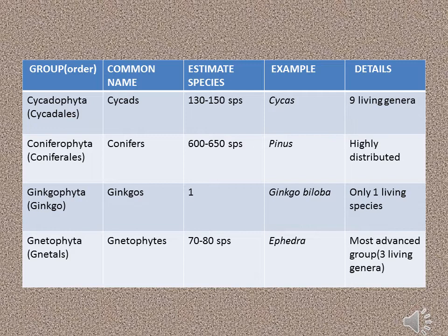Ginkgophyta, also called Ginkgoales, has the common name Ginkgo. It has only one species, which is Ginkgo biloba. Gnetophyta, also called Gnetales, has the common name Gnetophytes. They have 70 to 80 species; an example is Ephedra. This is the most advanced group and has three living genera.